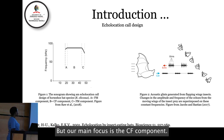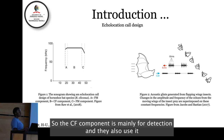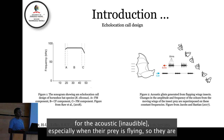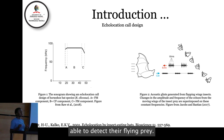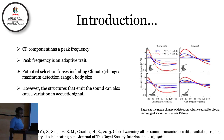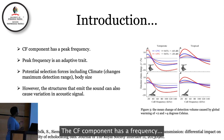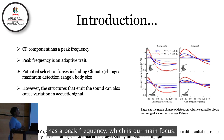Our main focus is the CF component. The CF component is mainly used for detection, and bats also use it for acoustic tasks — especially detecting prey when it is flying. The CF component has a peak frequency, which is our main focus.